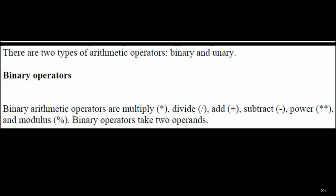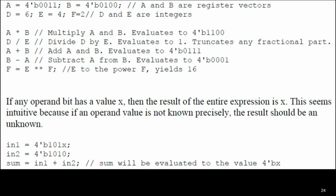Consider the example: A is 4-bit binary 0011, B is 4-bit binary 0100, D is decimal 6, E is decimal 4, and F is 2. First, A * B represents multiplication of A and B. Multiplying A and B gives 1100. Note: this is a basic multiplication operation, not an AND operation.